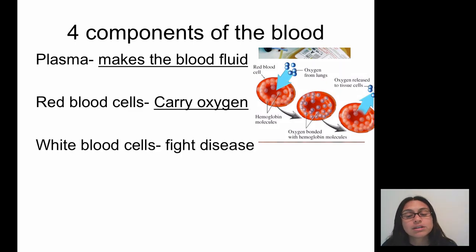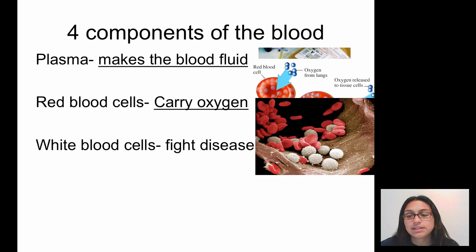The third is white blood cells and these guys help fight disease. So we just finished up the immune system and we know that our body is going to create certain types of cells that hunt and destroy specific types of bacteria and viruses. So we're looking at our white blood cells here.